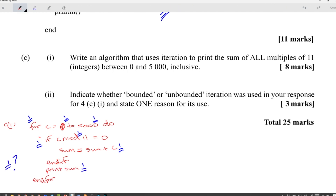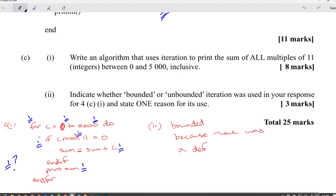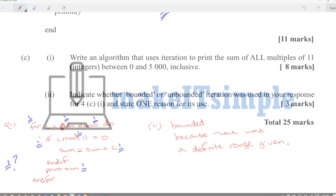Indicate whether the iteration is bounded or unbounded and state one reason for its use. We use bounded iteration because there was a definite range given — zero to five thousand inclusive.